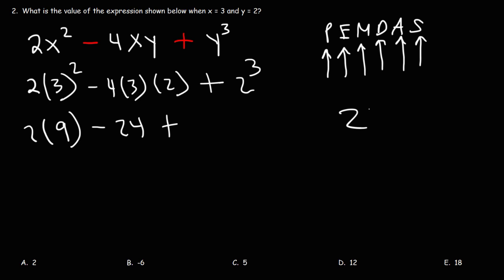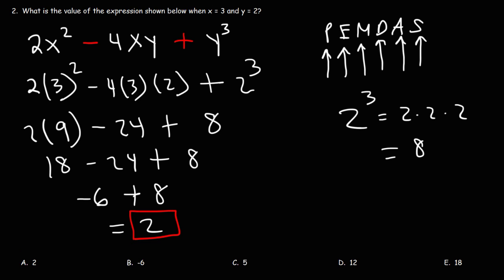Now 2 to the third power, that's basically you're multiplying three 2's together. So when you see exponents, you're dealing with repeat multiplication. 2 to the third is 8. 2 times 9 is 18. And 18 minus 24 is negative 6. Negative 6 plus 8 is 2. So this is the final answer, answer choice A.